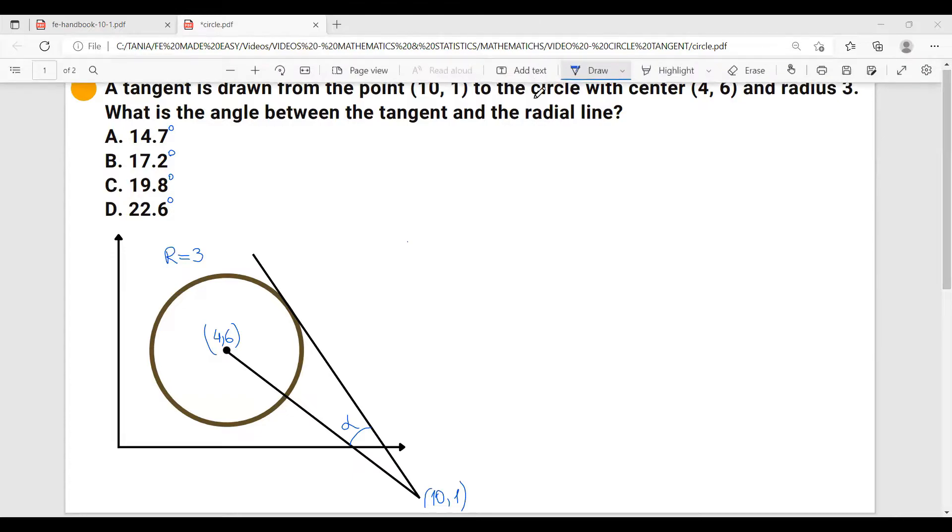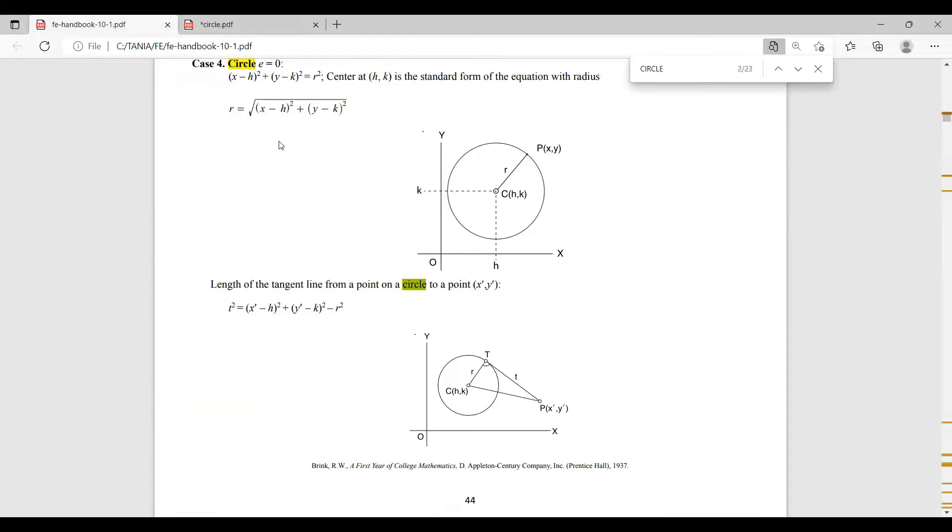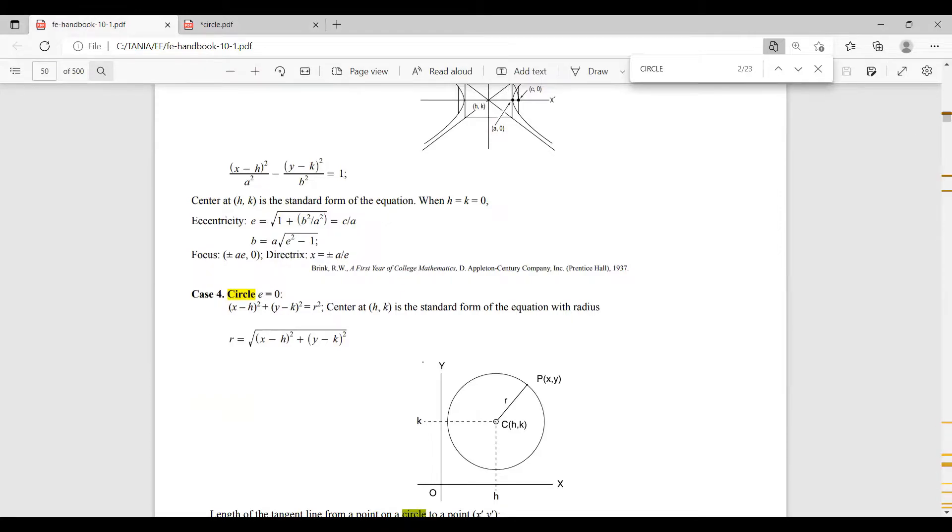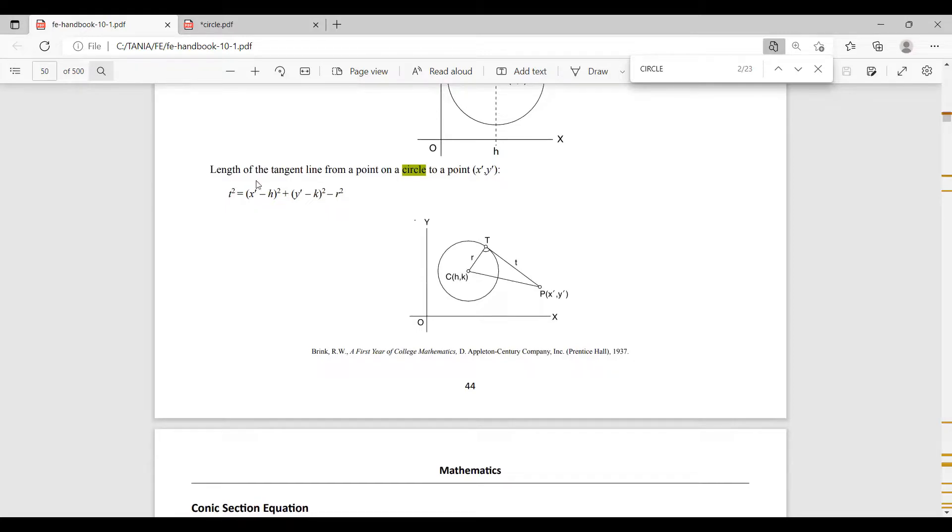Let's go to the FE handbook and I will write circle. Here we are given the standard form of the equation with radius r and the center at (h, k). Lower, we're given length of the tangent line from a point on a circle to a point (x', y'). So this is pretty much what we are also having in our problem. In order to calculate the tangent, we are given this formula. In our case, we are asked to calculate this angle between the tangent and the radial line.